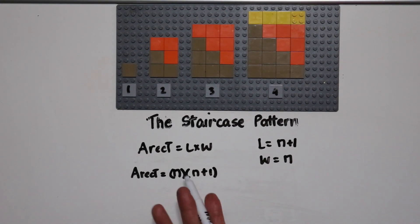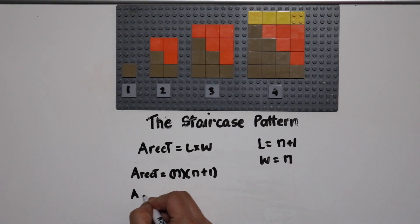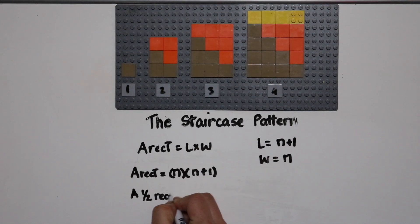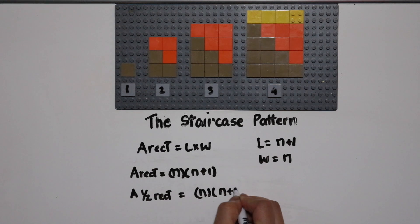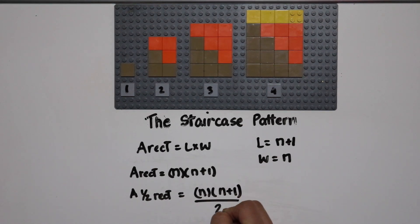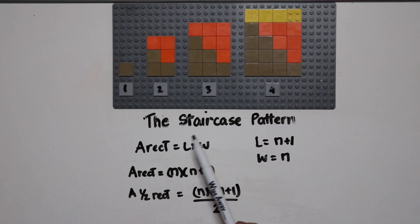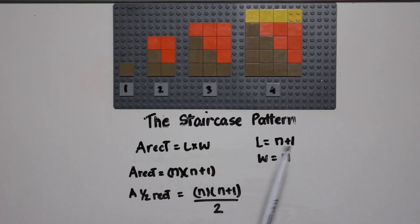But since we only need half of the rectangle, what we're going to do is divide this by two. And that should give us the number of tiles that we have that are brown.